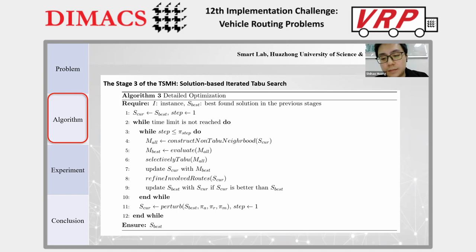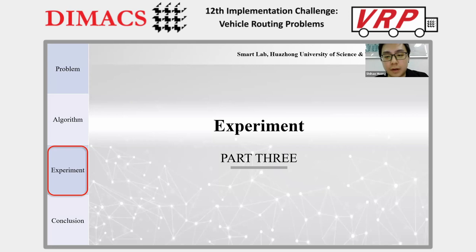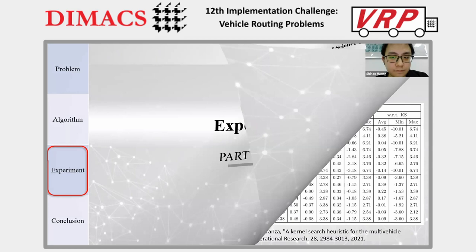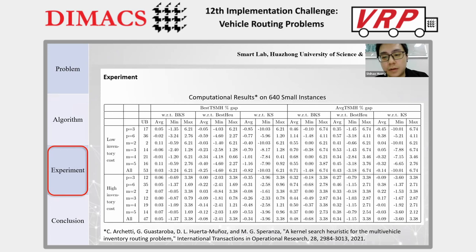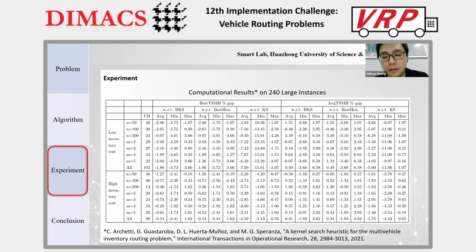So far, we have quickly reviewed the proposed algorithm. Now let's see some experimental results. The data used for comparison is from the previous paper listed at the bottom of the table. We also list the results of the TSMH algorithm compared with the kernel search proposed in that paper. A detailed explanation of the experimental results is available in the document we provide.